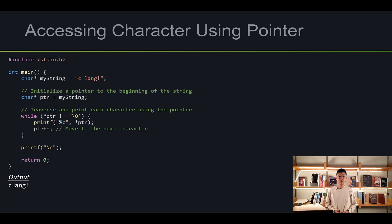Let me show you another example of how we can access characters using a pointer. I created a string called 'C lang' and another pointer called PT pointing to the string. I made a while loop that reads everything until the dereferenced pointer equals null. It prints the character, increments the pointer by 1, and keeps doing this until it reads the null character. The output also prints 'C lang'.